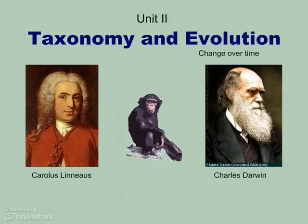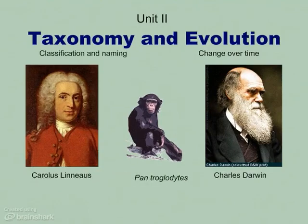It was Carolus Linnaeus who gave us a much more usable system to give the chimpanzee its name — pan troglodytes — because taxonomy is systems of classification and naming.